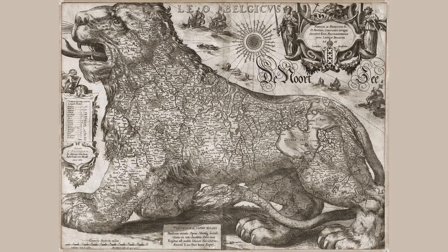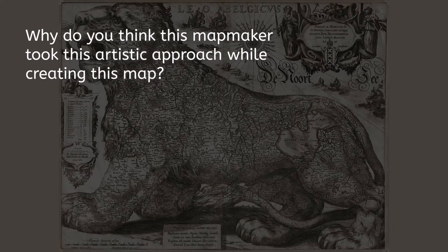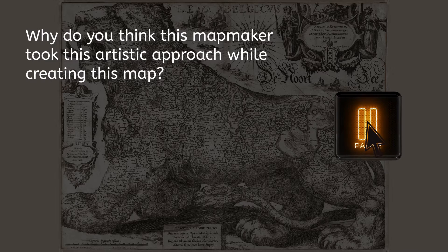Here's another called Leo Belgicus, made in 1611, artfully depicting the European lands known today as Belgium, Luxembourg, and the Netherlands. Why do you think this mapmaker took an artistic approach while creating this map? Pause the video and respond in your PDF.